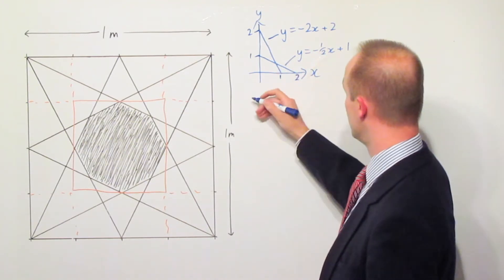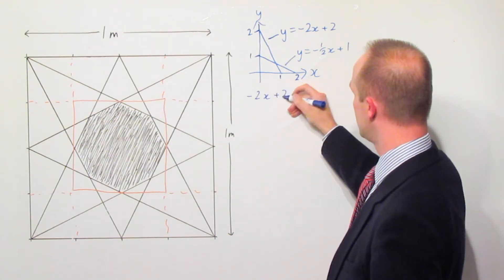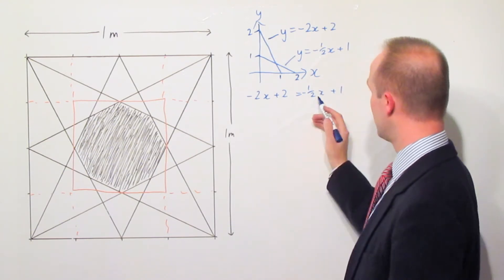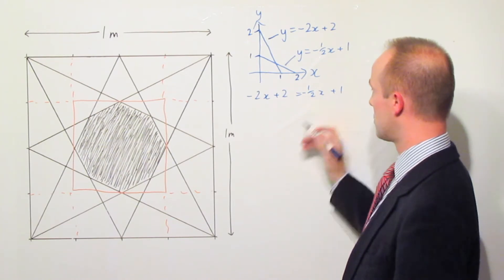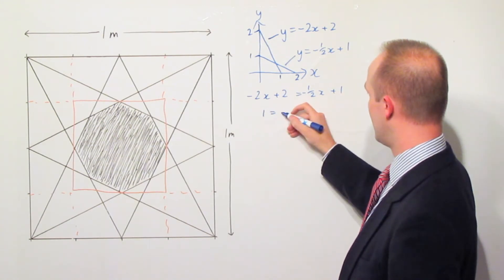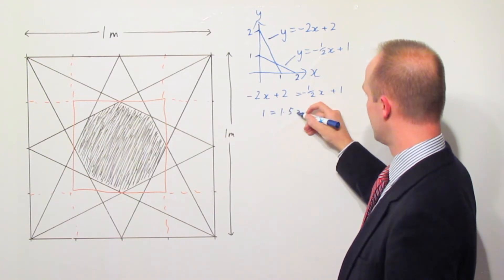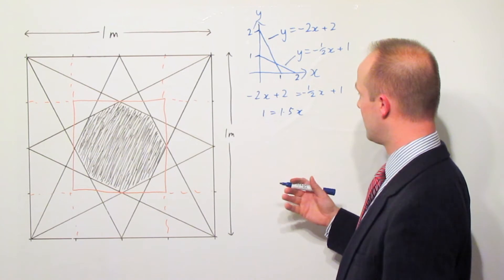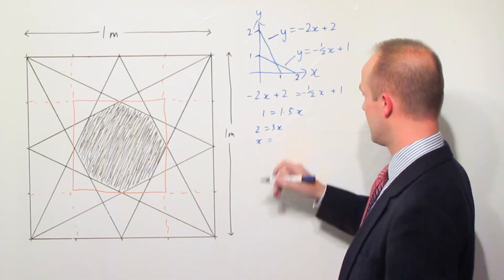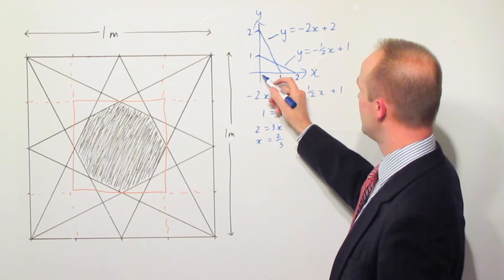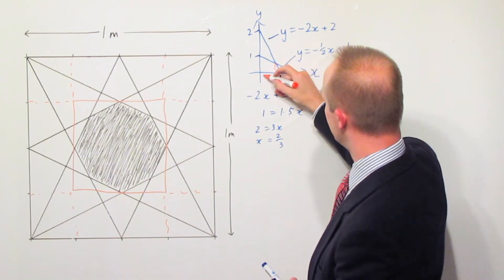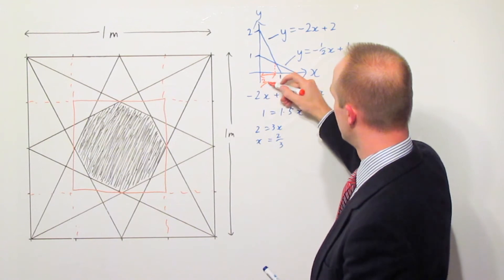So we make these two equations equal to each other: minus 2x plus 2 equals minus a half x plus 1. With a little bit of rearrangement — we bring the x terms together, add 2 to both sides, subtract 1 from both sides — and we get that 1 equals 1.5x. Rearranging a tiny bit further we get 2 equals 3x, or x equals two thirds. So that distance there has got to be two thirds.